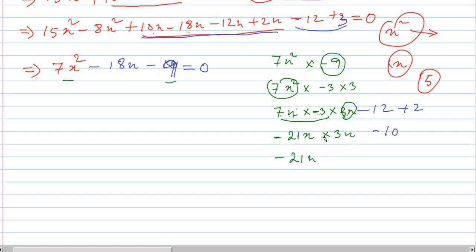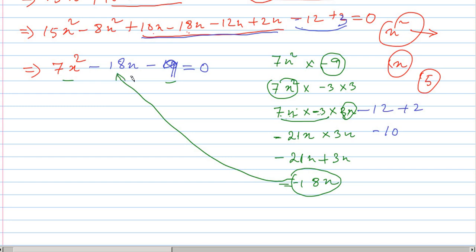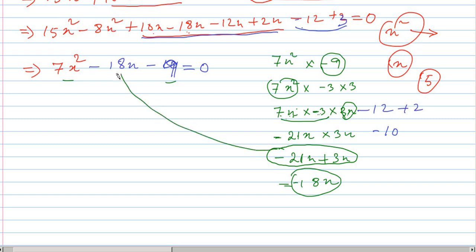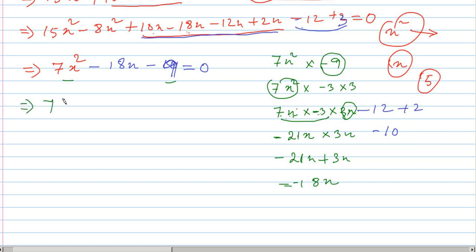This is minus 2 into 1x plus 3x is minus 18x. This minus 18x equals minus 1. So 7x squared minus 18x equals minus 21x plus 3x, so minus 21x plus 3x minus 9 equals 0.